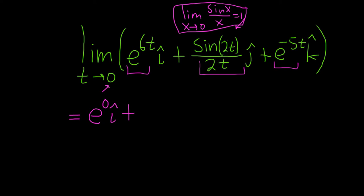So here you see that your 2t is kind of like your x, and they both match. So when t approaches 0, this 2t here is like your x, and it approaches 0. So this whole limit here is going to be 1, so plus 1 j-hat.